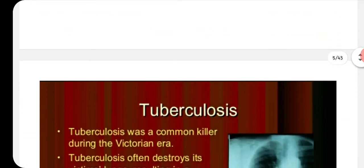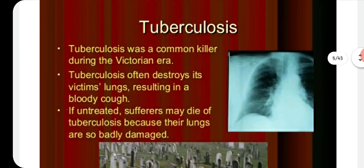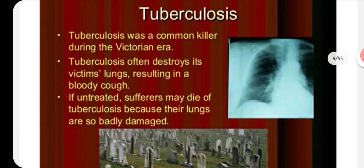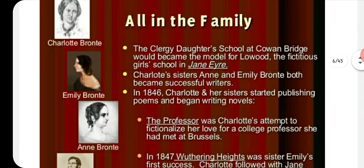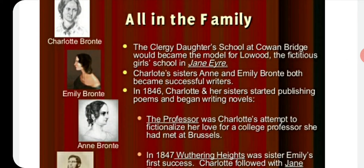Charlotte's two older sisters, Maria and Elizabeth, died of tuberculosis — a very common and deadly disease at that time, the same disease from which John Keats died. Tuberculosis attacks the lungs and proved fatal. The Clergy Daughters' School at Cowan Bridge became the model for the fictitious Lowood School in Jane Eyre.